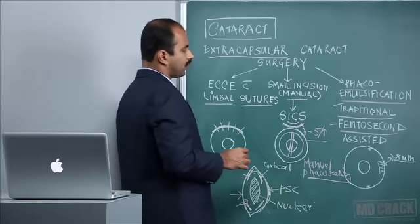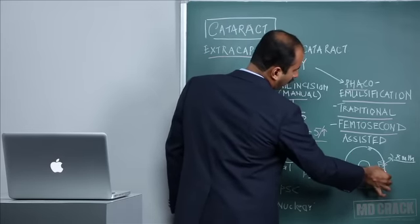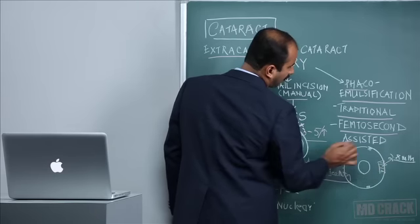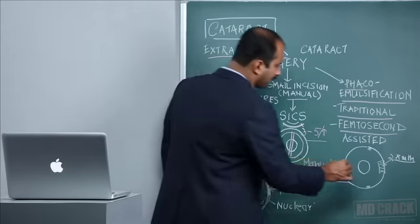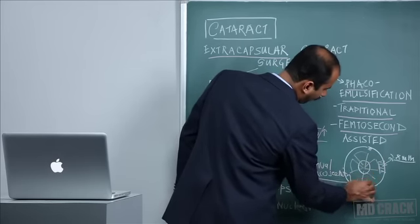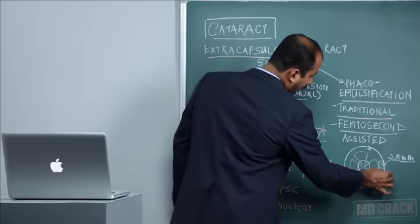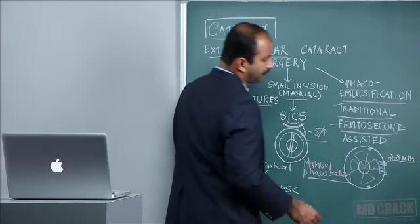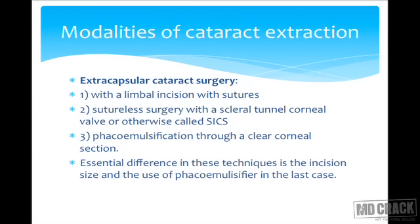Phacoemulsification involves at least two small incisions: one around 2.8 to 3 millimeters and one barely 1 millimeter, to remove the entire nucleus in fragments. These fragments are made with a phacoemulsifying probe and a second instrument, and can be individually aspirated through the FACO probe. The essential difference in these techniques is the incision size and use of the phacoemulsifier.